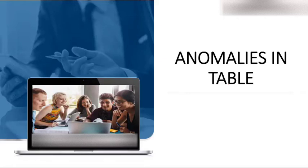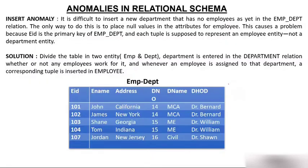We have already understood functional dependency. Now we'll understand anomalies, because these two concepts are very important for studying normalization. Before going into normalization, we should have a clear understanding of anomalies, functional dependency, and keys. So let's start with anomalies — there are actually three types: insert anomaly, delete anomaly, and update anomaly.